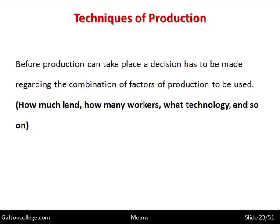Before production can take place, a decision has to be made regarding the combination of factors of production to be used — how much land, how many workers, what technology and so on. Before production takes place there has to be an evaluation of the quantities and types of factor of production that are going to be needed.